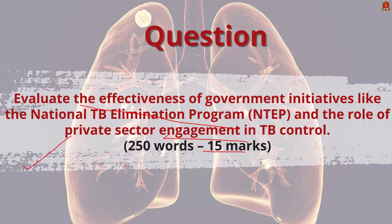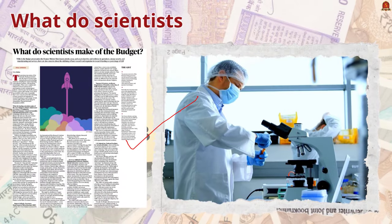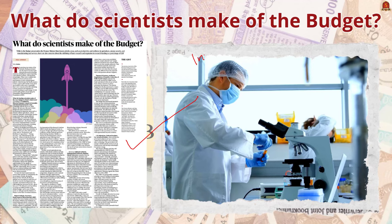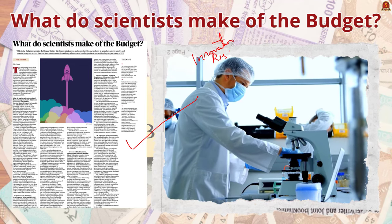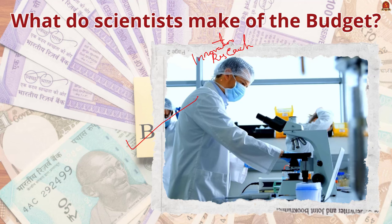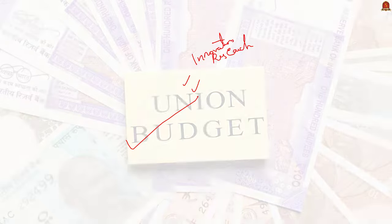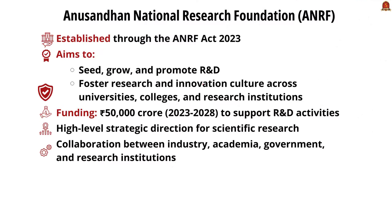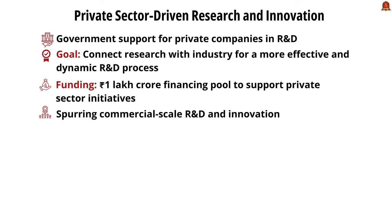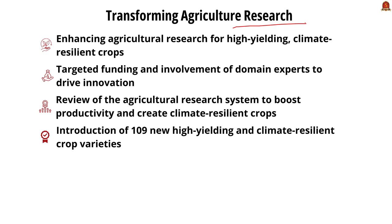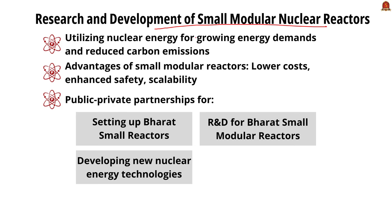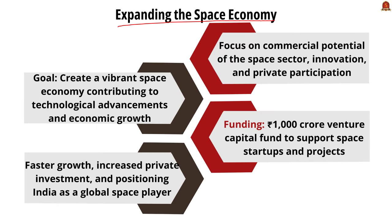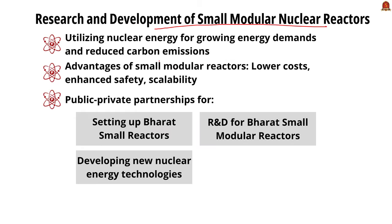Moving to the second news article: the Union Budget 2024–25 has placed strong emphasis on innovation, research, and development as key drivers of India's progress toward becoming a Viksit Bharat. The budget outlines ambitious initiatives to boost the country's scientific and technological capabilities. Key focus areas include: setting up the Anusandhan National Research Fund (ANRF), private sector-driven research and innovation, transforming agriculture research, R&D of small and modular nuclear reactors, and expanding the space economy.